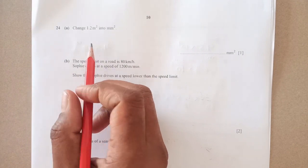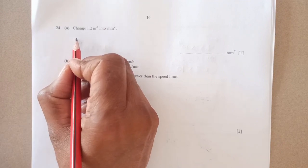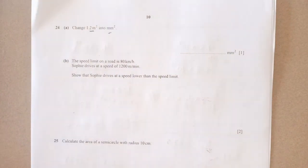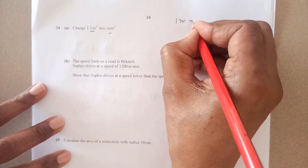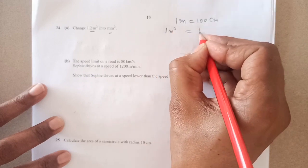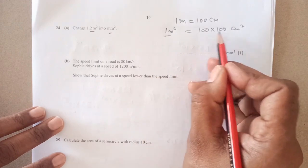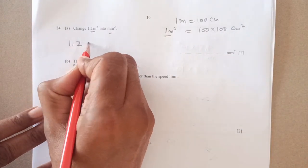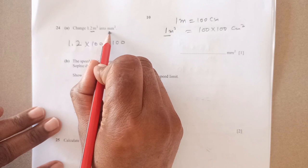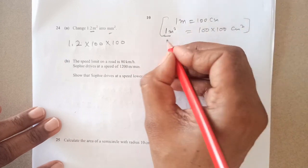Number 24: change 1.2 meter squared into millimeter squared. Be careful, it's squared. 1 meter equals 100 centimeters, so 1 meter squared equals 100 times 100 centimeter squared. So 1 meter squared equals 10,000 centimeter squared. Therefore 1.2 times 10,000 - that's meter to centimeter.